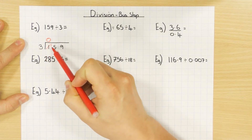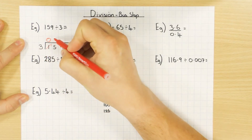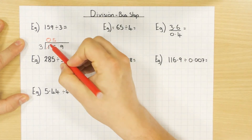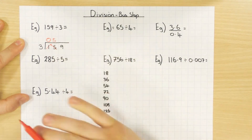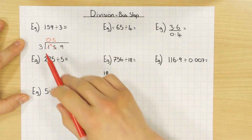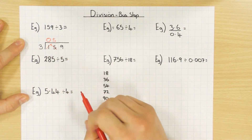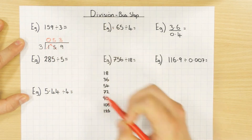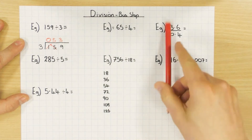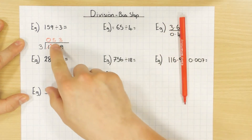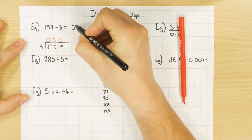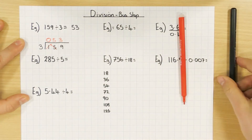The 1 carried over turns the next digit into 15. How many 3s go into 15? That's just 5 with no remainder. Then how many 3s go into 9? The answer is 3. So the overall answer is 53.